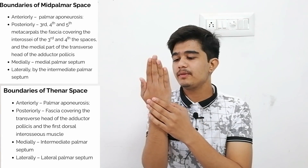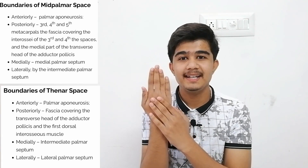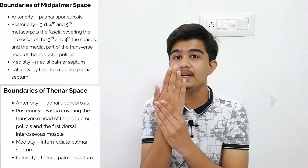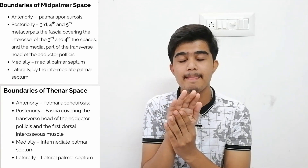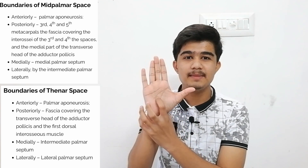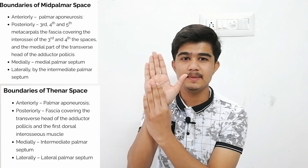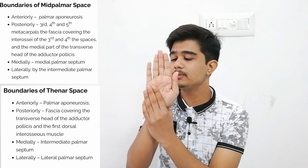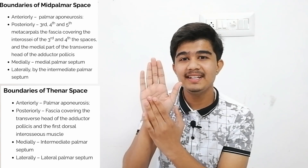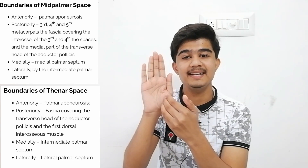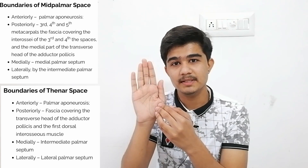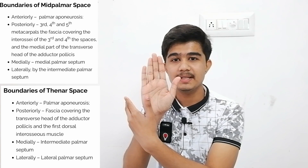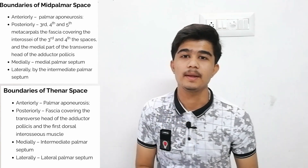If we look at the posterior boundary of mid-palmar space: posteriorly, our extensors and interosseous muscles. This is the mid-palmar space. Here is the thenar space. Look at the lateral boundary — laterally what will come? The intermediate palmar septum. And medially, the medial palmar septum.